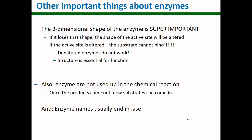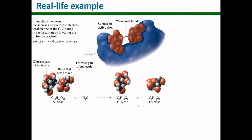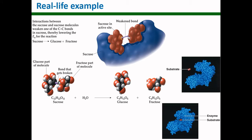Another thing that makes it easy to tell when a molecule is an enzyme is that the name usually ends in -ase. For example, the big purple glob here is the enzyme sucrase — it ends in -ase. In its active site it can bind sucrose. The name of an enzyme is often related to the substrate or products, so sucrase breaks down sucrose. Sucrose is glucose and fructose bound together. Once the sucrose binds into the active site of sucrase, that bond gets weakened and the glucose and fructose break apart from one another.